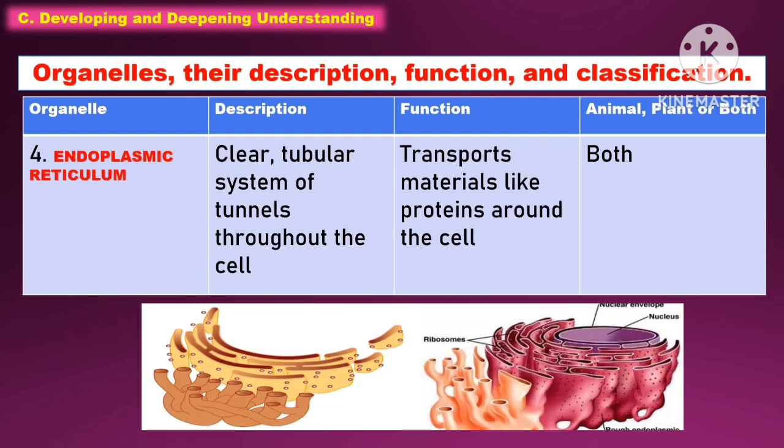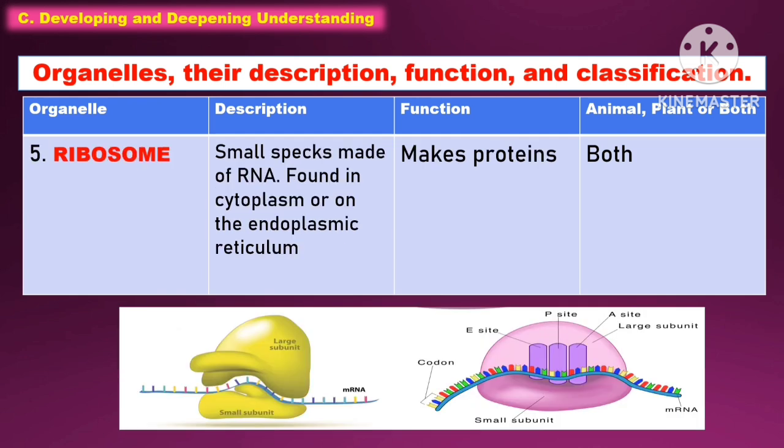Another organelle is the endoplasmic reticulum. It is a clear tubular system of tunnels throughout the cell. The function of this is to transport materials like proteins around the cell, and it is present in both animal and plant cell.